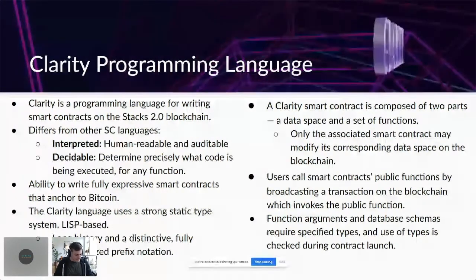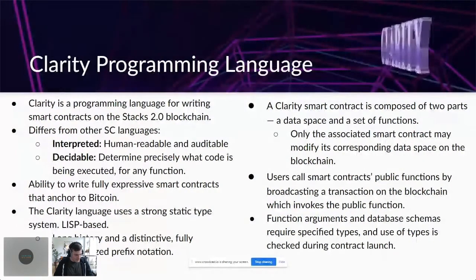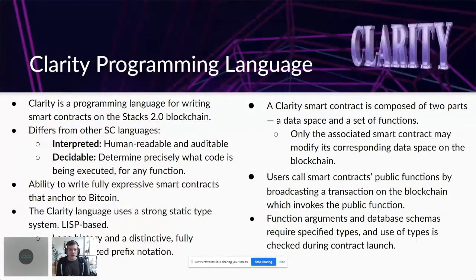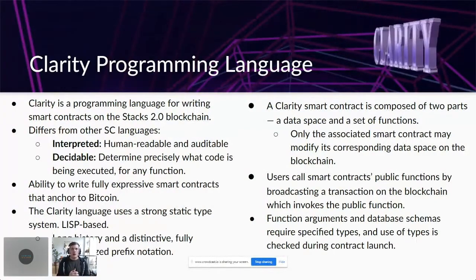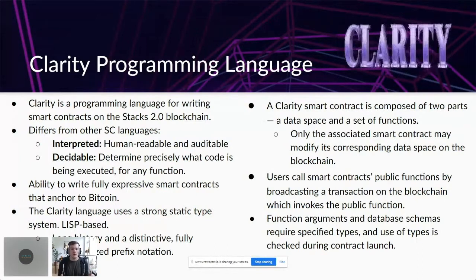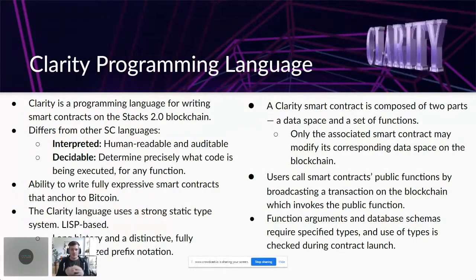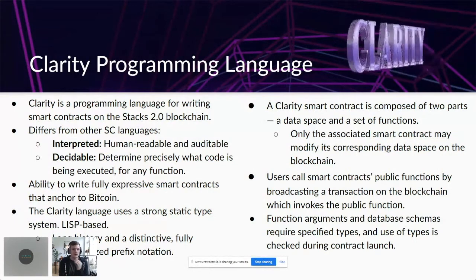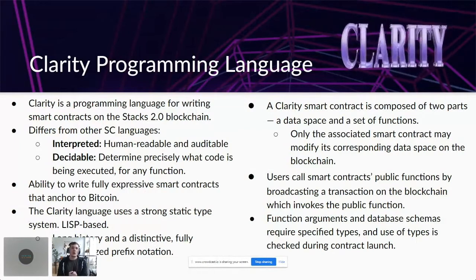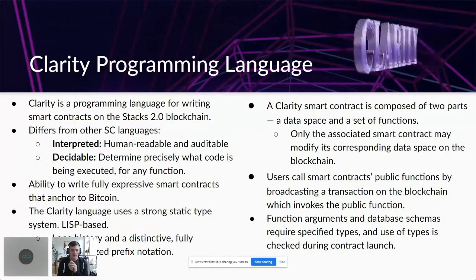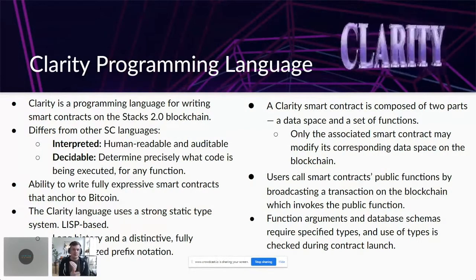Another question: is Clarity only available for Bitcoin blockchains? Yes — Clarity is only available for the Stacks 2.0 blockchain. Stacks 2.0 leverages Bitcoin using proof of transfer or proof of burn, anchoring to Bitcoin and using its security in the consensus mechanism. But Clarity solely interacts with the Stacks 2.0 blockchain. Some smart contracts interact with the Bitcoin blockchain's consensus mechanism, but you're never directly sending a Bitcoin transaction using a Clarity smart contract.